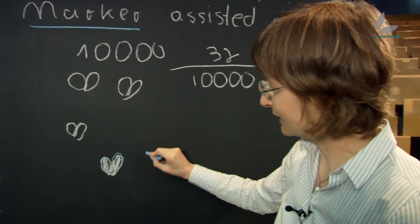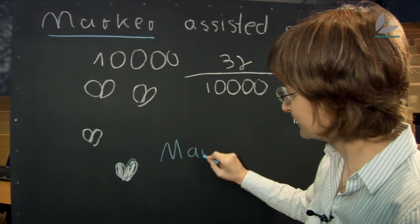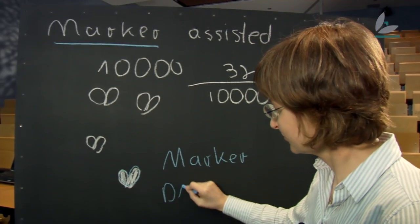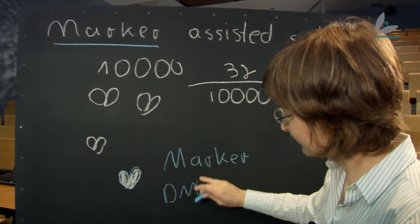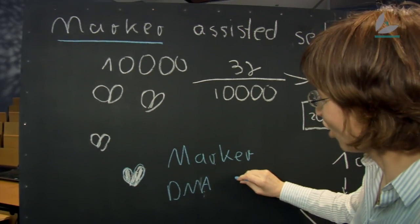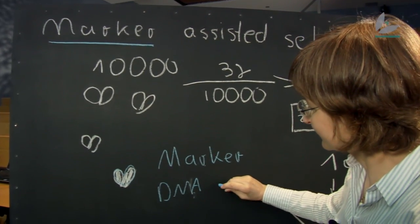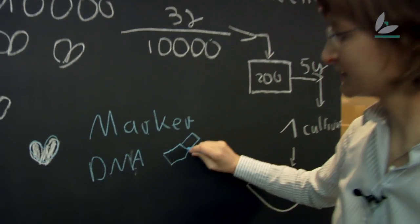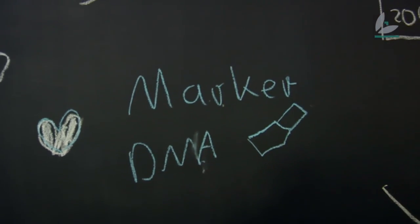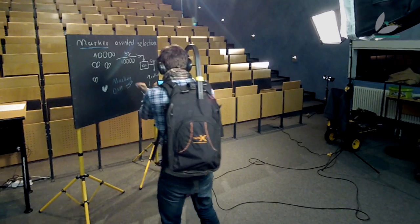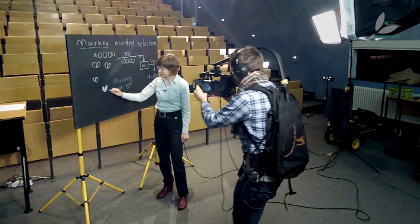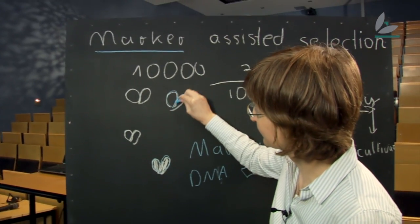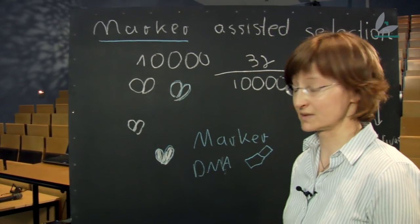And these markers, they can be either DNA or they can be molecules within the plant, metabolites. This is what we use, metabolites. And the second feature of these markers is that they are much more frequently found in the tolerant ones than in the plants which can't cope with drought.